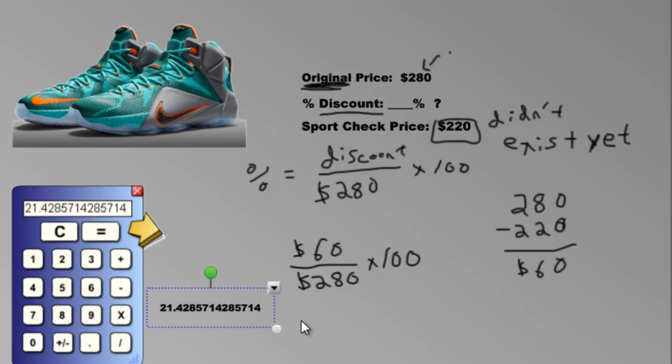There's a lot of decimal points, but don't let that scare you. We'll just have to round it, which is no big deal. We're going to round it to the nearest whole number. So look beside it. Is that 5 or bigger? No, it's not 5 or bigger. It's smaller than 5. So the one stays the same and you get 21% discount.